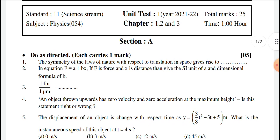An object thrown upwards has zero velocity and zero acceleration at the maximum height. Is this statement right or wrong?